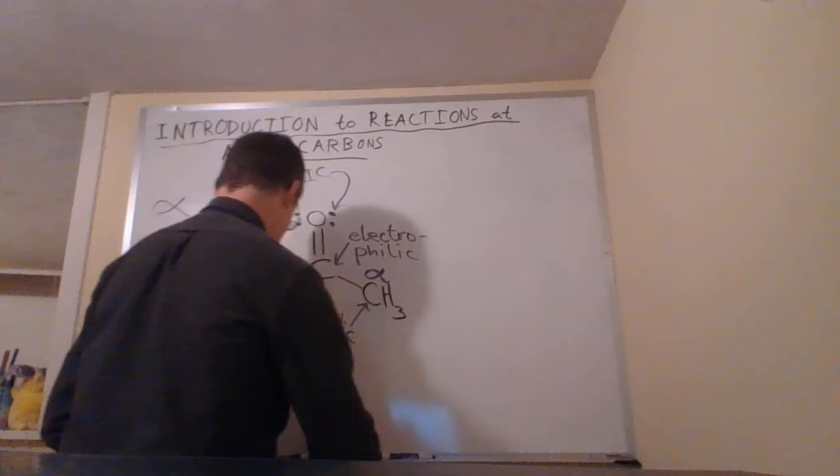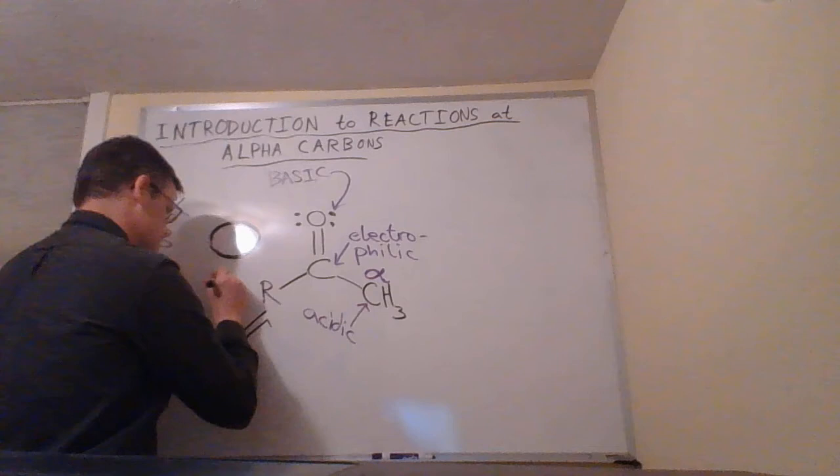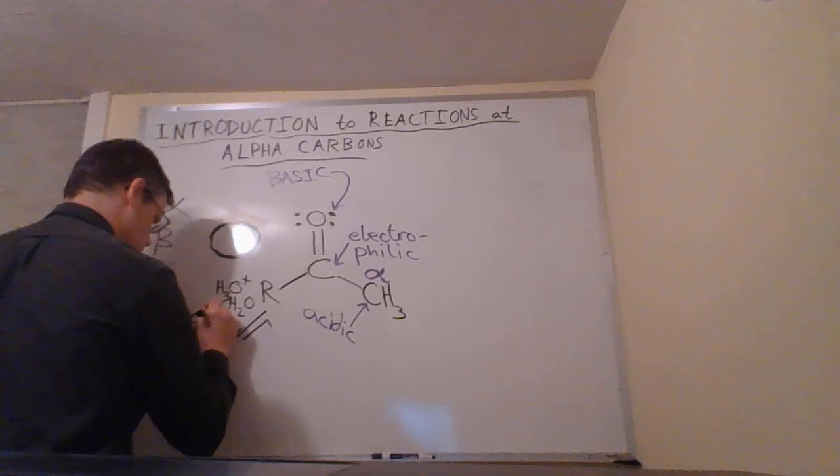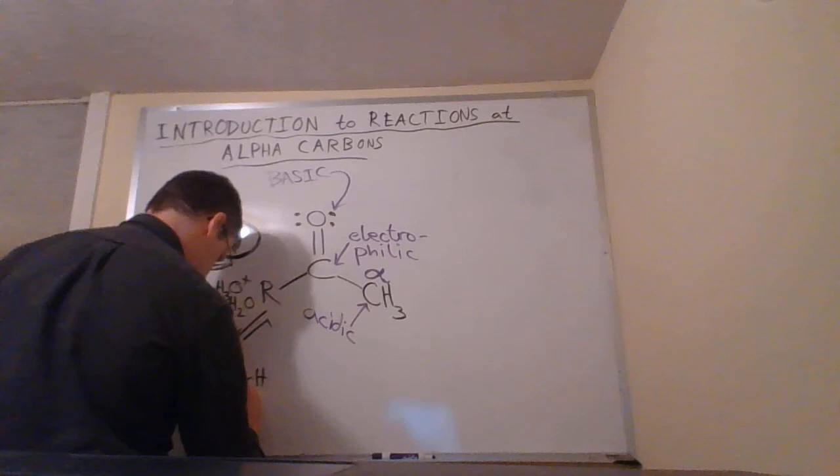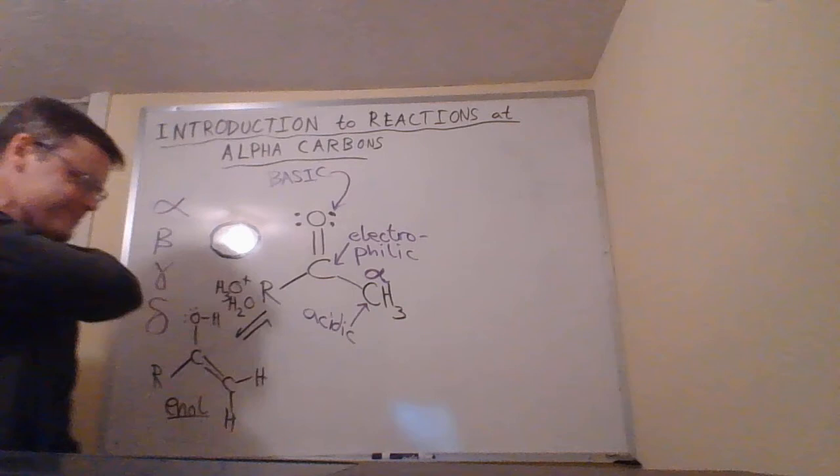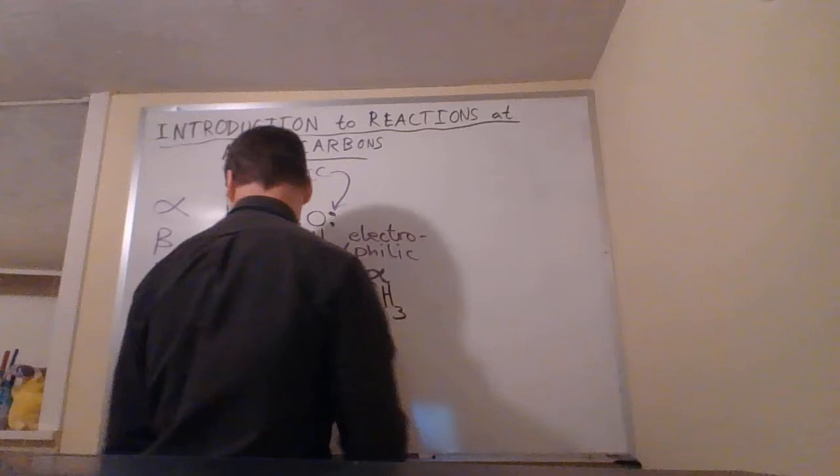One thing that we can do with this position: if we react with this under acidic conditions, say H3O+ and H2O, we can do what's called an acid-catalyzed tautomerization to get this enol. And we'll talk about tautomerizations in the next video.